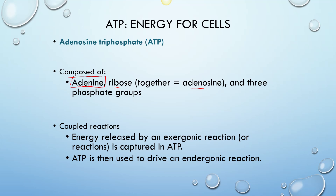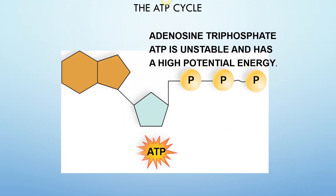Energy released by exergonic reactions is captured in ATP. ATP is then used to drive endergonic reactions. We can release energy by breaking down substances, trap that energy in ATP, and store it until we need to use it to build something or perform an endergonic reaction. The bond between phosphate groups readily wants to break, and breaking it causes a spark — a spark that can create movement inside a cell.